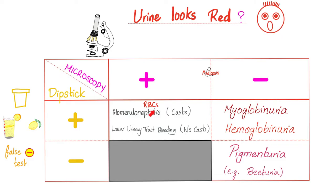True hematuria is when you see red blood cells in the urine. To see red blood cells in the urine, these are microscopic structures that require microscopic examination of the urine sample. By the way, did you know that too much vitamin C can lead to a false negative test? The test comes back negative; however, it should have been positive — the patient has a problem.